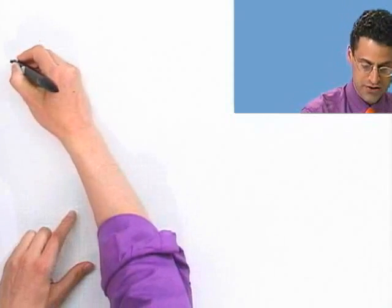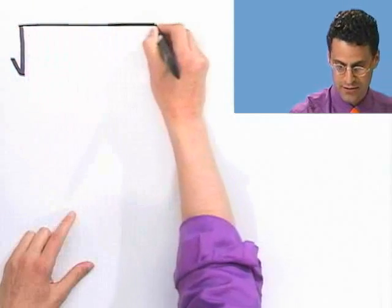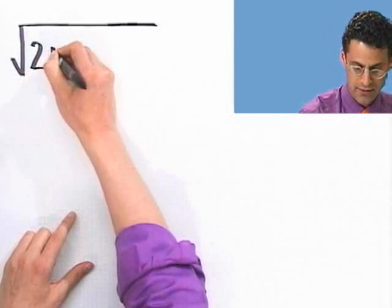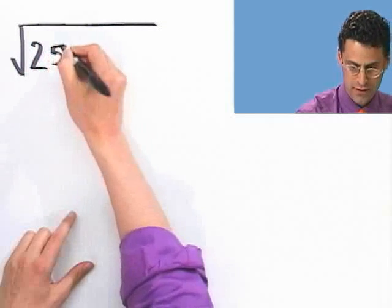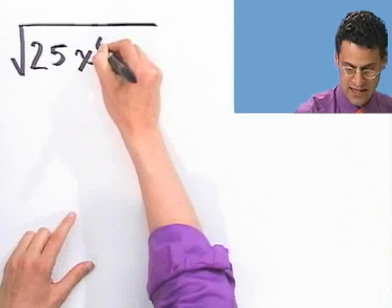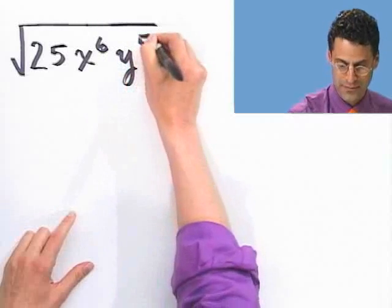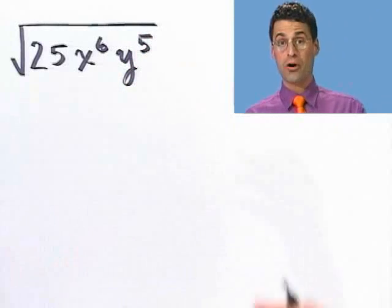Let's try a couple of examples just to convince you there's no difference at all — it's the exact same method. Let's take the square root of 25 times x to the sixth times y to the fifth, and see how far we can simplify that.